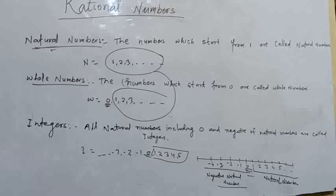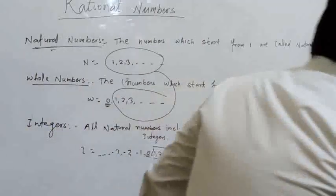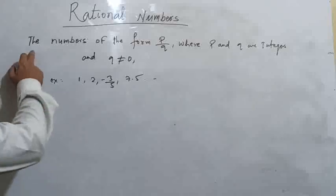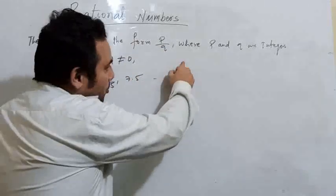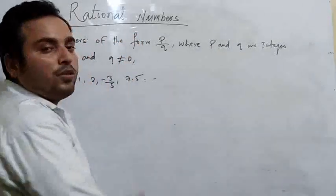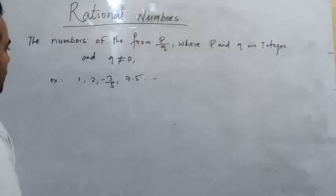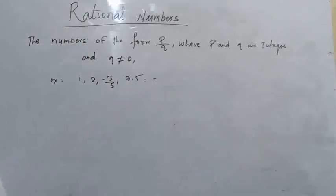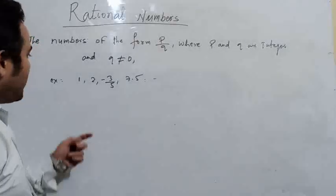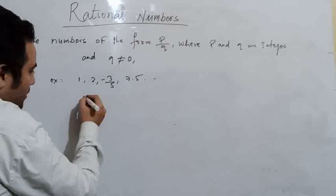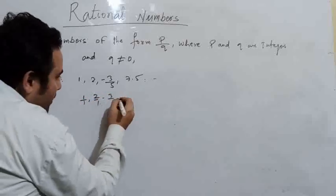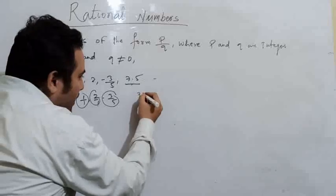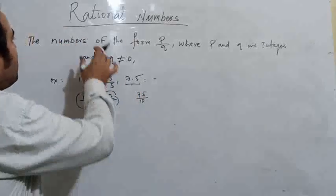After this topic we are going to study about rational numbers. Here is the definition: the number of the form p by q, where p and q are integers and q is not equal to 0, is known as a rational number. Here are some examples: 1, 2, minus 3 by 5, and 7.5. We can write 1 as 1 by 1, 2 as 2 by 1, and 7.5 as 75 by 10. All are rational numbers.